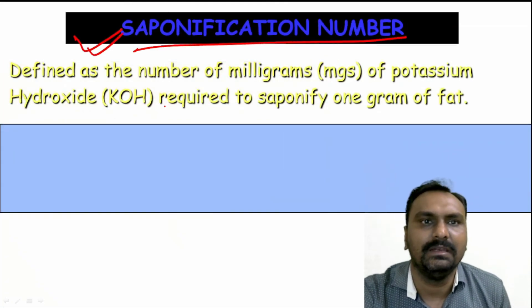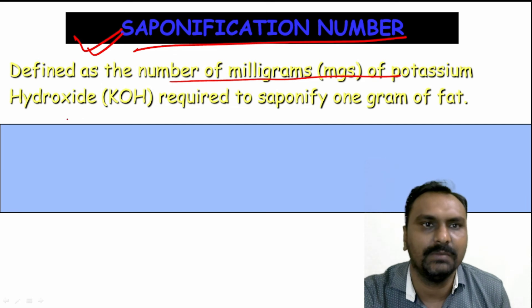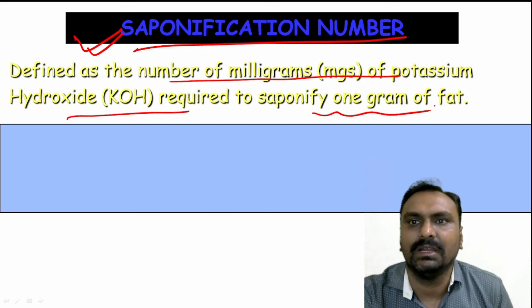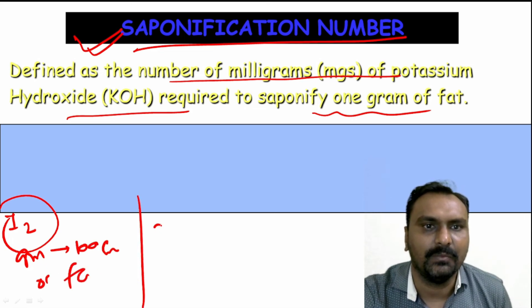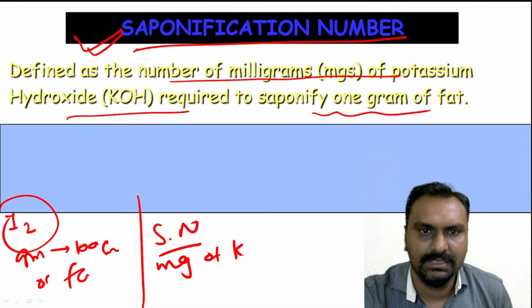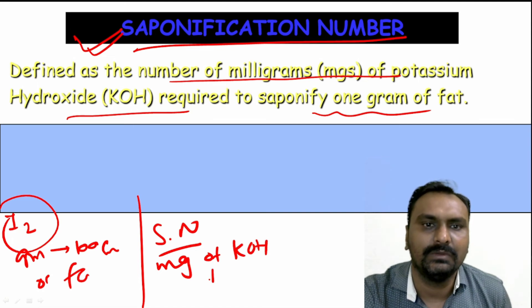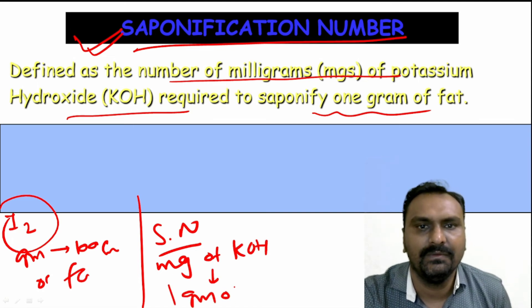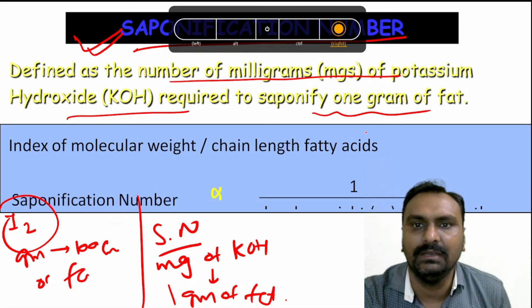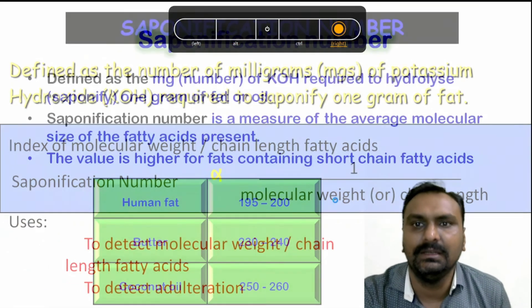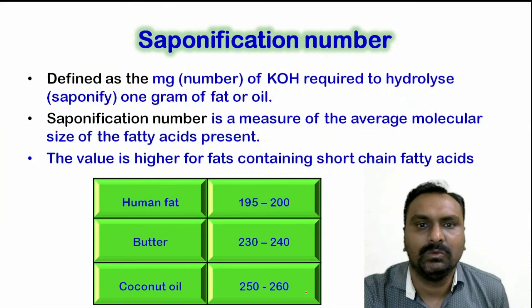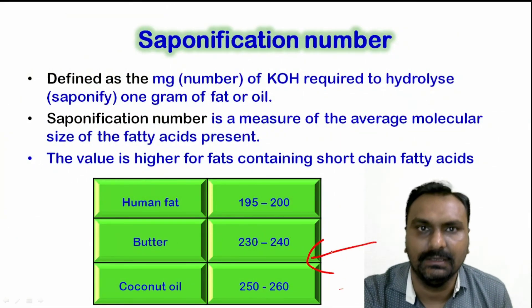One more terminology is saponification number. It is defined as the number of milligrams of potassium hydroxide required to saponify one gram of fat. Note the difference: iodine number is grams of iodine taken up by 100 grams of fat, while saponification number is milligrams of KOH required to saponify one gram of fat. It is inversely proportional to the molecular weight — lower the molecular weight, higher the saponification number. It is used to detect the molecular weight of the fatty acid as well as to know adulteration.